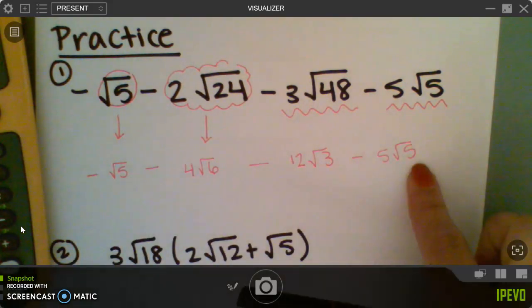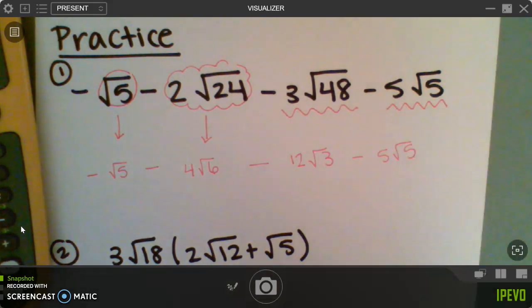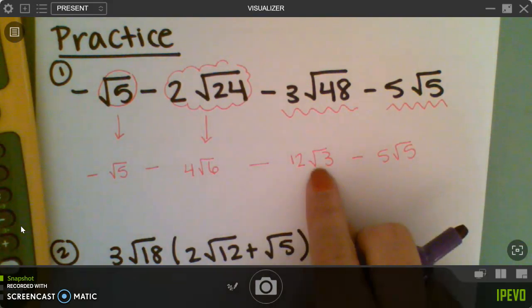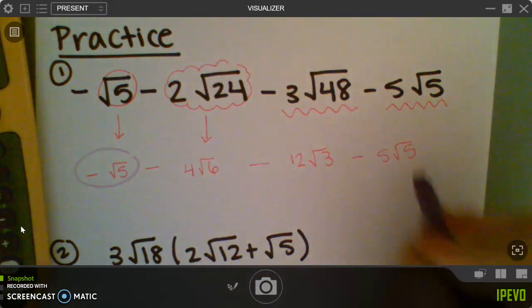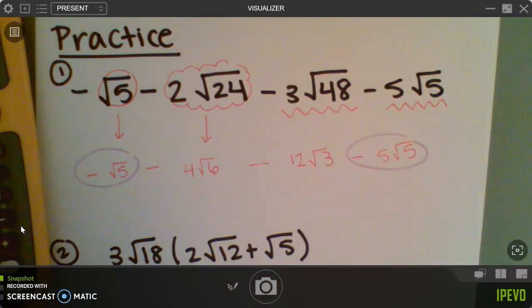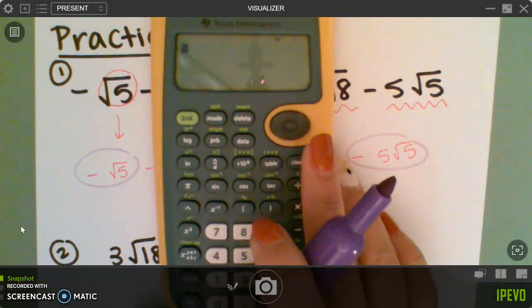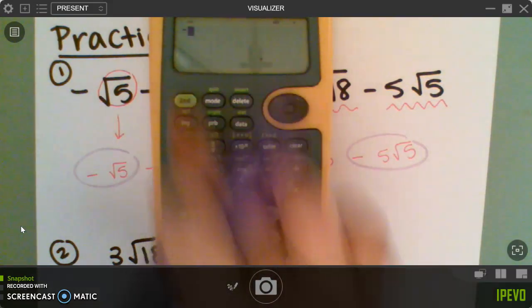Then I have this problem right here. Again, my calculator will not do all four things like this, so I decide what I need to do next. Well, when you're simplifying square roots, they have to have the same number under the root to be able to add or subtract them. So 4 root 6 and 12 root 3, I can't do anything with those. But right here, this negative root 5 and this negative 5 root 5, I can combine.